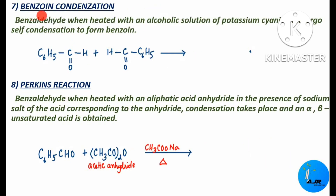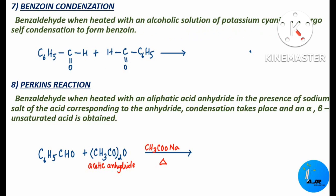The next important reaction is benzoin condensation. Benzaldehyde, when heated with an alcoholic solution of potassium cyanide, undergoes self-condensation to form benzoin. Two molecules of benzaldehyde are taken and heated with alcoholic KCN.